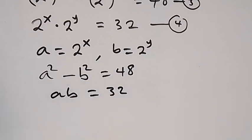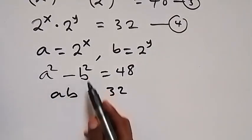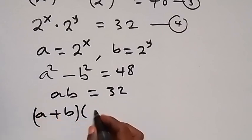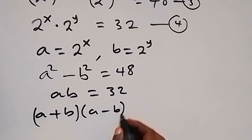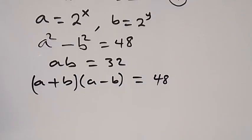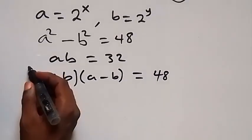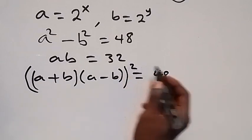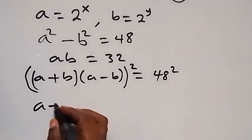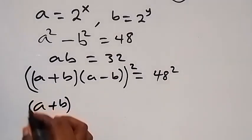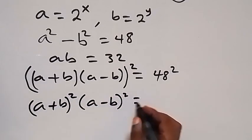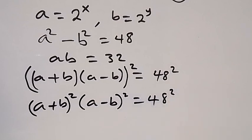Applying the difference of two squares, a squared minus b squared can be written as (a + b)(a - b) equals 48. When we square both sides, we get (a + b) squared multiplied by (a - b) squared equals 48 squared.